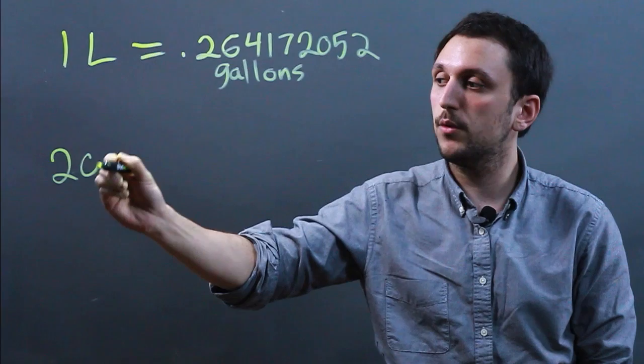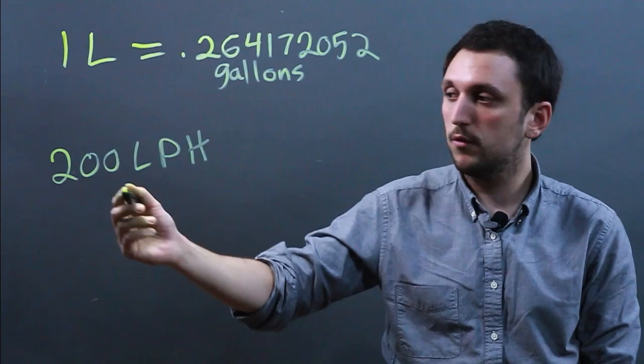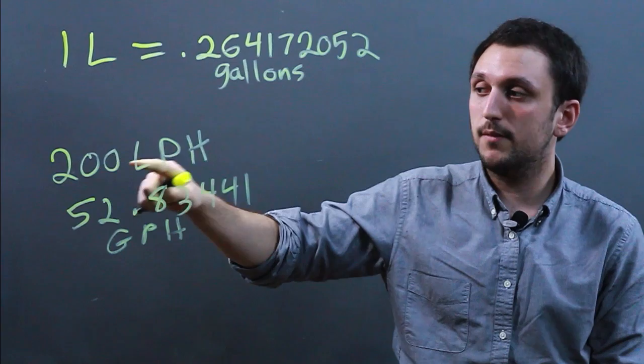So let's say you're dealing with 200 liters per hour. You just have to multiply this number by 200. So you would get 52.83441 gallons per hour.